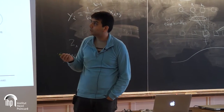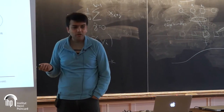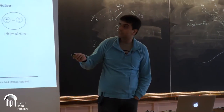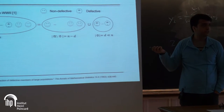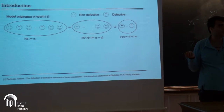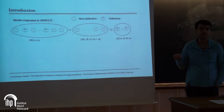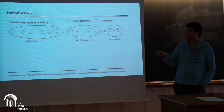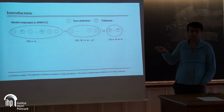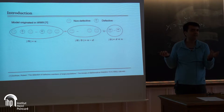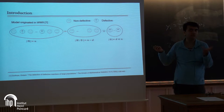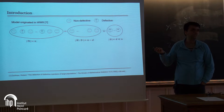So, group testing — what's the model? Basically, there's a group of people, some of them are sick. The original model proposed by Dorfman around the Second World War involved a small number of sick people — let's call them defective, because it's also used in a different context where there's a small number of defective items in a factory, and you want to figure out which are defective.